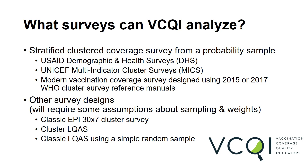VIKI can be used to analyze data from the earlier EPI 30-by-7 cluster surveys, from a cluster lot quality assurance sampling survey, or even from a classic LQAS that uses a simple random sample. If you have questions about whether VIKI can legitimately analyze data from your survey, don't hesitate to post a question on the forum in the VIKI Users Group on the TechNet 21 website. You'll see a link to that users group at the end of this video.